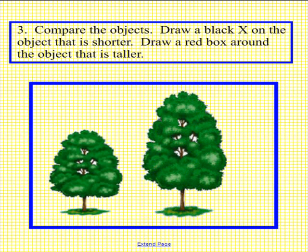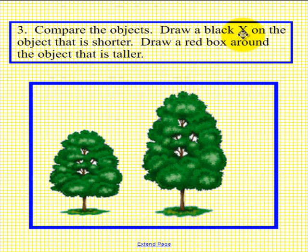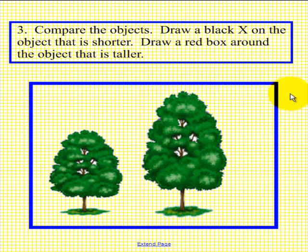Problem 3. We should have another new student up at the Smart Board. You'll notice that we have a tree on the left and another tree on the right. Compare the objects — draw a black X on the object that is shorter, and draw a red box around the object that is taller. If you would please pick up a pen and do that now. When done, place the pen back in the tray.